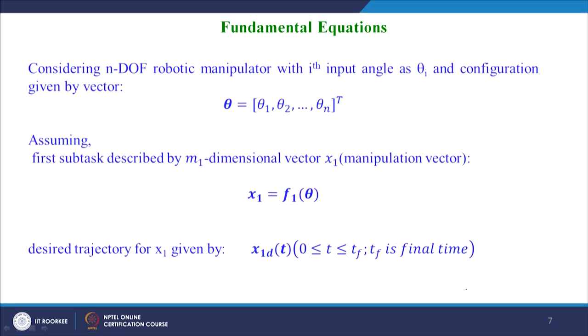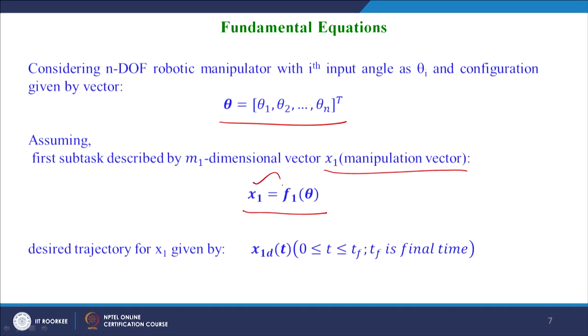Coming to the basic equations of redundant manipulators: consider an n-degree-of-freedom manipulator with n joint angles given by the generalized coordinate vector theta equal to theta 1 to theta n, where the ith joint is given by theta i. The first task is given by the manipulation vector x 1 equal to f 1 of theta, which is the forward kinematic equation, where x is the Cartesian position of the end effector as a function of the joint coordinates. The desired trajectory for x 1 is represented by x 1 d of t, where t varies from 0 to t_f, where t_f is the final time and the time step is the sampling period.